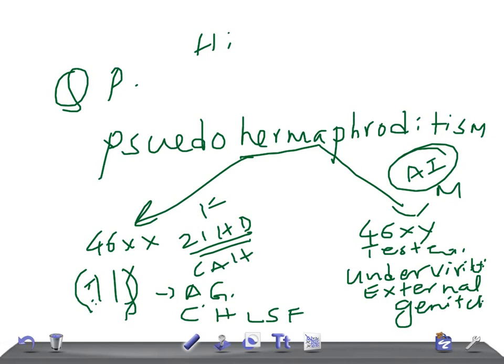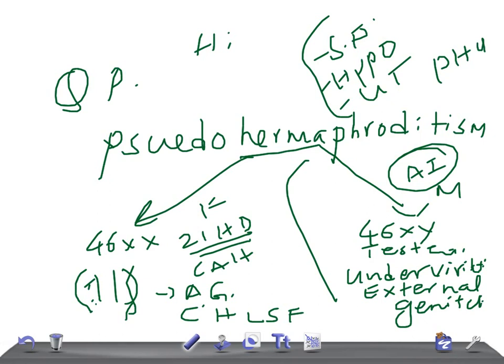In males, what do you see for signs and symptoms? Small phallus, then hypospadias - hypospadias is really very important topic for USMLE, remember, and clinically also - undescended testis. Remember, you can remember it's SPU: small phallus, hypospadias, and undescended testis.